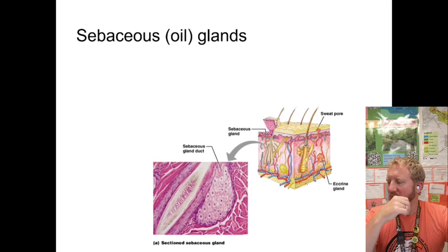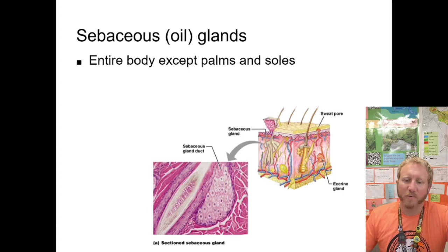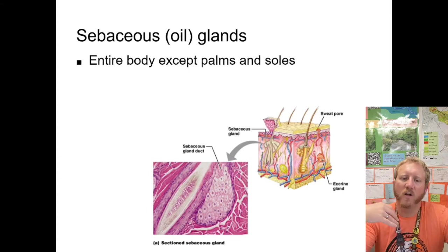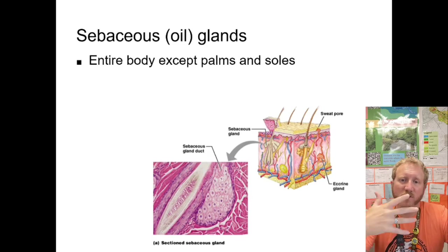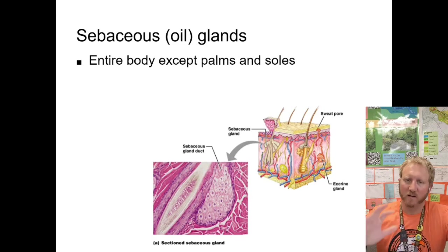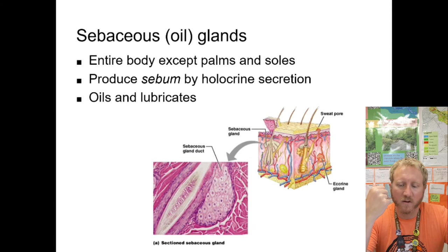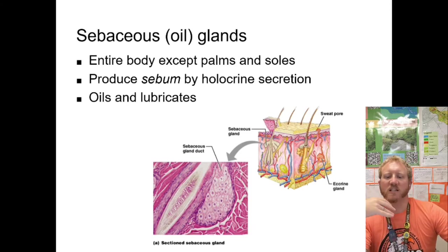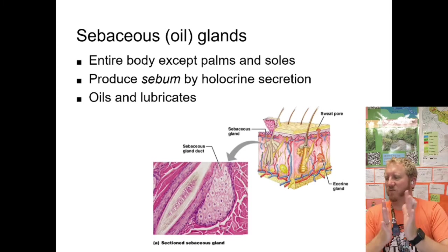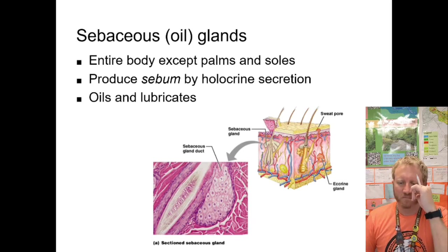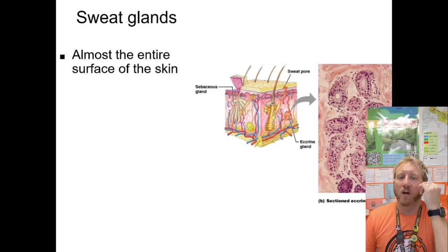Oil glands, also known as sebaceous glands, secrete sebum — basically oil. They cover the entire body except the palms and soles, where we don't want anything decreasing friction. Sebum provides a layer of protection against water and moisture loss and lubricates the skin to prevent irritation from skin rubbing together.